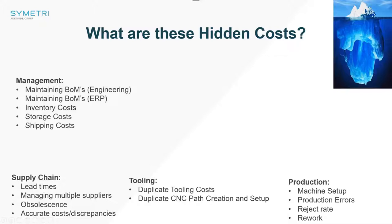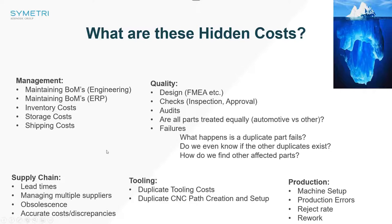From a production point of view, production teams never want to be setting up a component over and over again. We want one setup and to run it as many times as we can because that helps with throughput. It reduces production errors, reduces reject rates and rework. So production teams don't want those sorts of duplicates floating in.